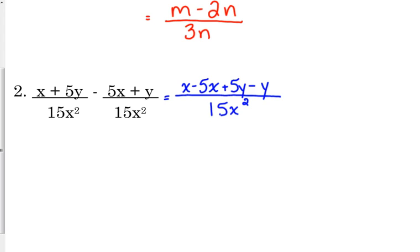So the 5x is negative, the y is negative. I just paired together the common terms, the x from the first one and the 5x from the second one. I'm just pairing them together so we can see them better. So x minus 5x is negative 4x. 5y minus y is positive 4y.